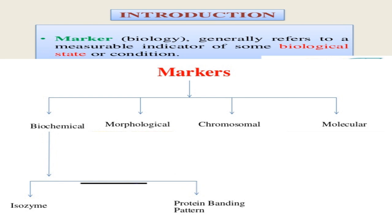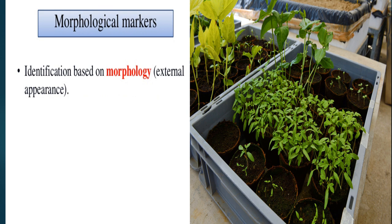Biological markers are measurable indicators of a biological state or condition. They can be biochemical (isozymes or protein banding patterns), morphological, chromosomal, or molecular. Morphological markers are identified based on external appearance. Their advantages include being easily monitored, but disadvantages include being affected by the environment, limited in number, some appearing late in plant development making early scoring impossible, pleiotropic gene action, and requiring complete genome assays for quantitative trait locus analysis.